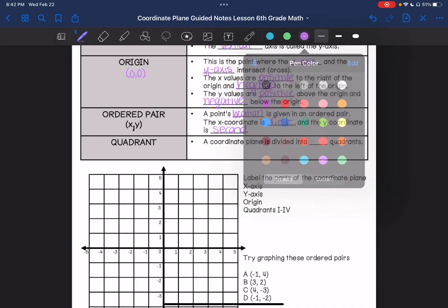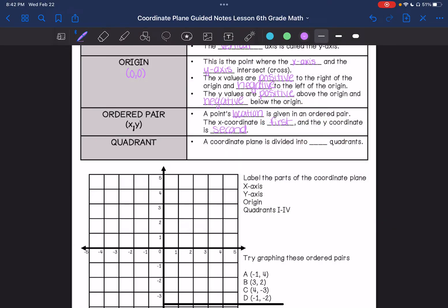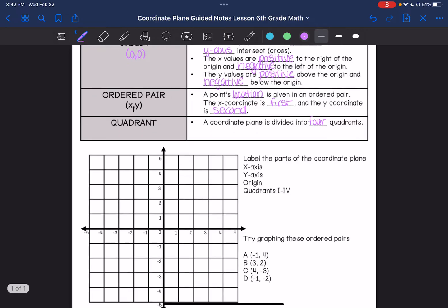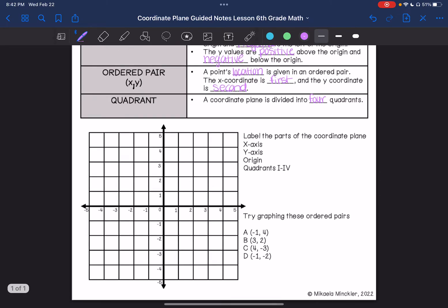Alright, on a coordinate plane, it is divided into four quadrants. And I will show you that on the coordinate plane down here. So it says label the different parts of the coordinate plane. We are going to label the x-axis, the y-axis, the origin, and then all four quadrants.